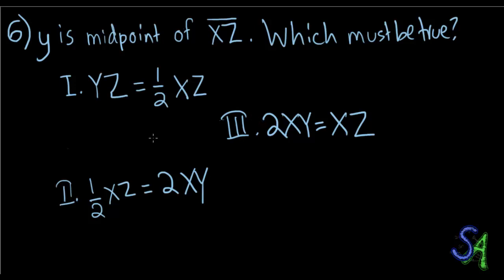Now we know either 2 or 3 has to be wrong, because half XZ equals to 2XY over here, and then XZ equals to 2XY over here. So one of them has to be wrong, but we're not sure about number 1. So let's first draw this line XZ. This is X, this is Z, and Y is the midpoint of this line. So this is equal to this.